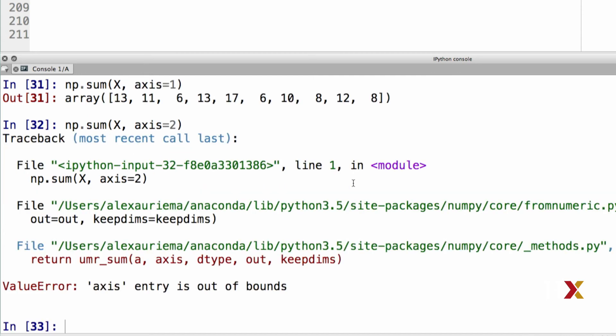In this case, when I run this, Python gives me the error message, axis entry is out of bounds. This is because I'm trying to sum over axis dimension two, whereas I only have two dimensions, dimensions zero and one. Summarizing our finding, taking a sum over dimension zero sums over rows, and taking a sum over dimension one sums over columns.